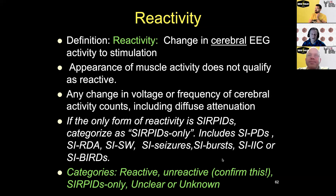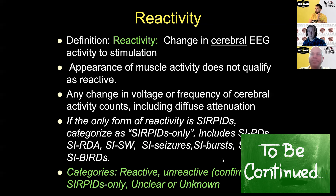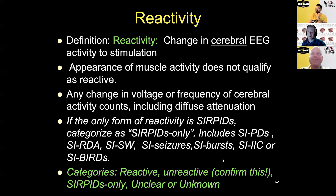You should have a standardized protocol for assessing reactivity, and before calling a record unreactive, make sure you did it multiple times and properly with a painful or noxious stimulus. One additional caveat: for patients who are locked in, you must ensure your stimulus actually reaches the brain. A completely cognitively normal locked-in patient given painful stimuli below the neck won't feel a thing, and you'll falsely call them unreactive. That's where opening the eyes and giving bright light may be a more effective stimulus, because it actually gets into the brain.